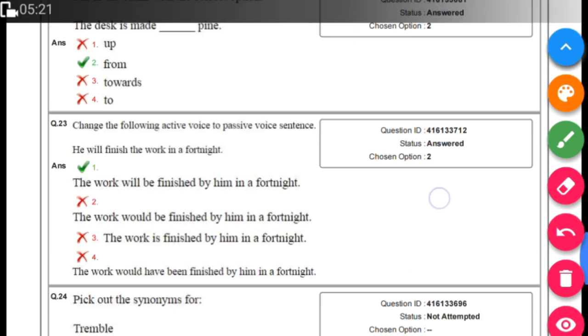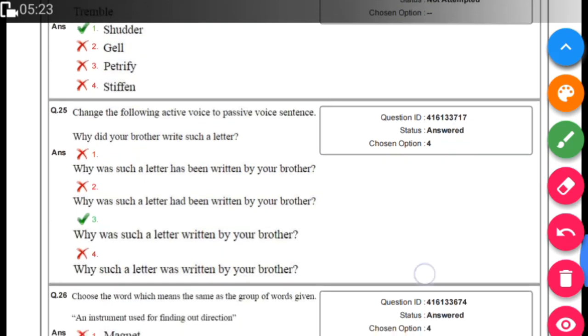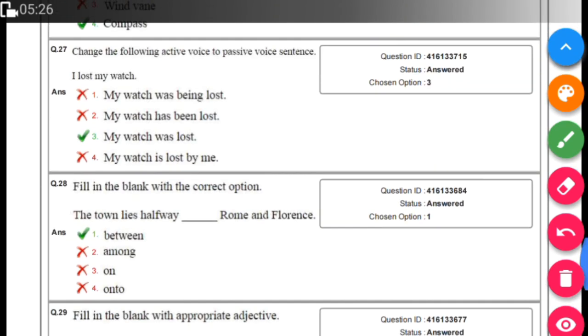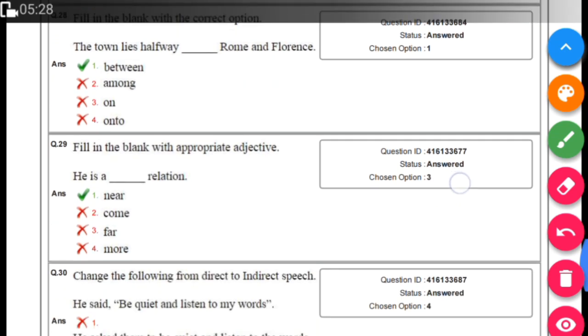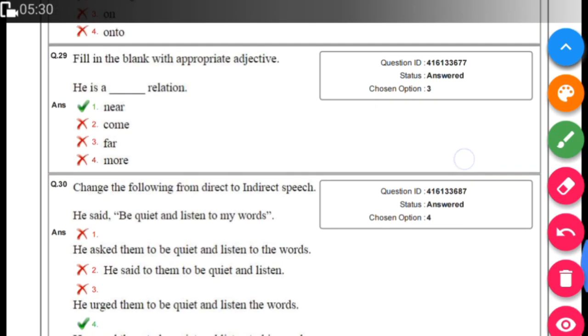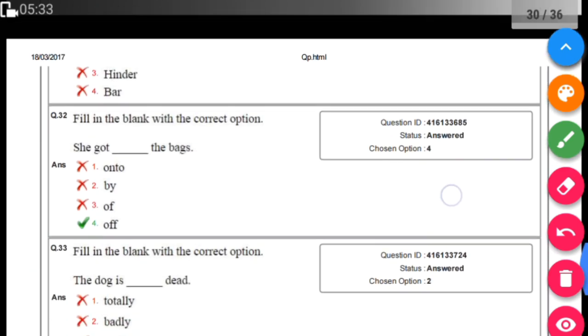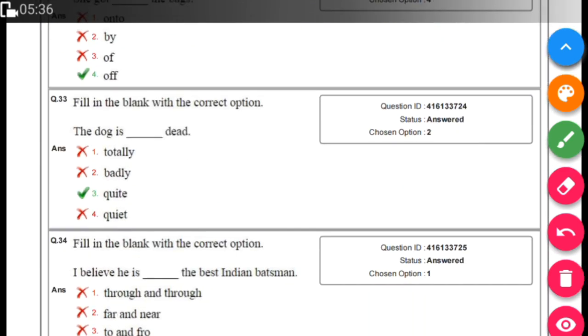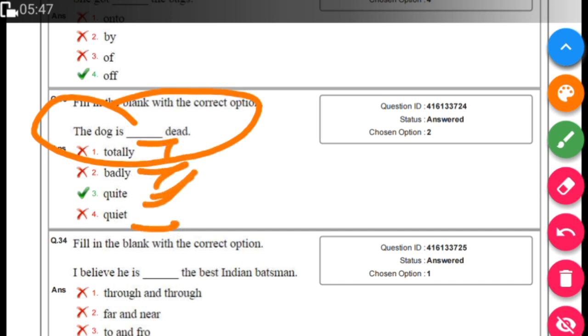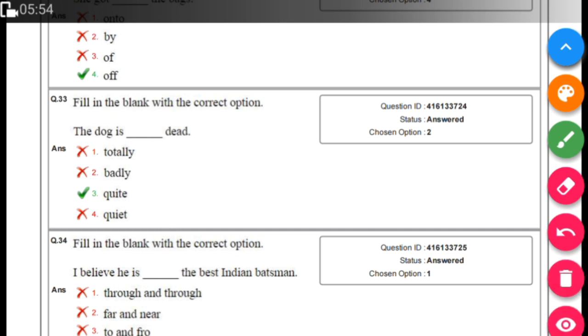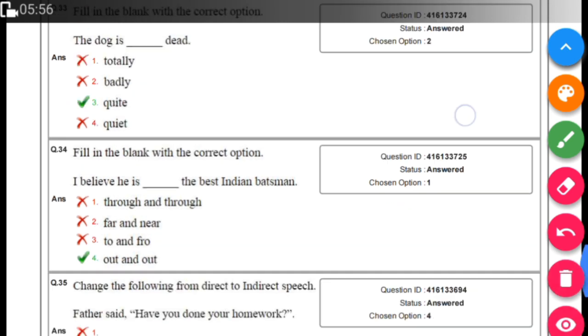There are 60 questions total covering passive voice, active voice, prepositions, and conjunctions. Basic questions are asked in the DMRC exam. This question is very interesting. 'The dog is [blank] dead.' The answer is 'quite dead,' not 'totally,' 'badly,' or 'quiet.' First, check what the meaning is. Don't be confused—'quite' is Q-U-I-T-E.